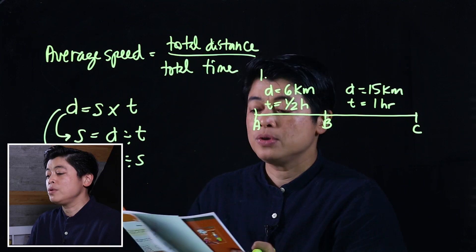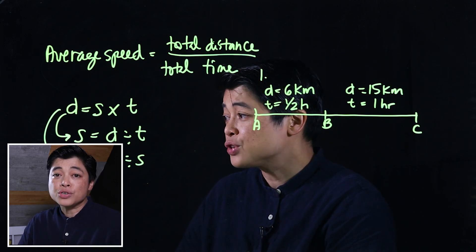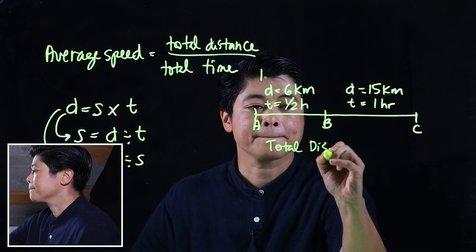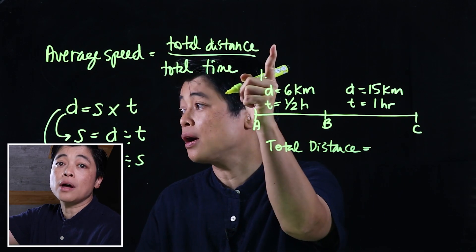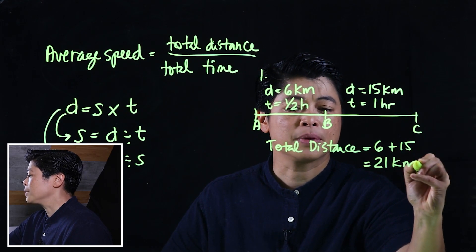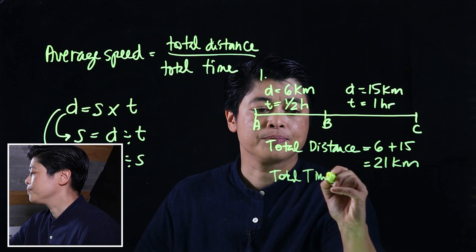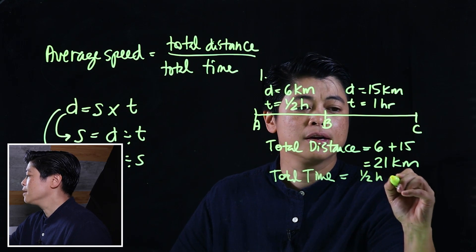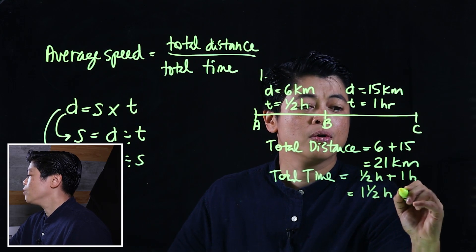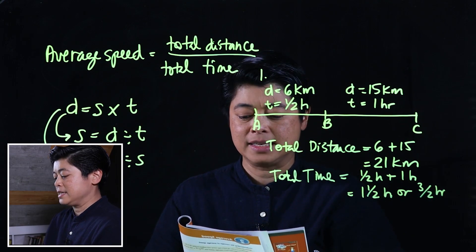The book has leading questions, so if you need to fill in the blanks we have no choice but to follow. I'll show my version of the solution after discussing the book's version. The book calculates total distance as 6 plus 15, which is 21 kilometers. Then total time is one-half hour plus one hour, which is one and a half hours, or three-halves hours.